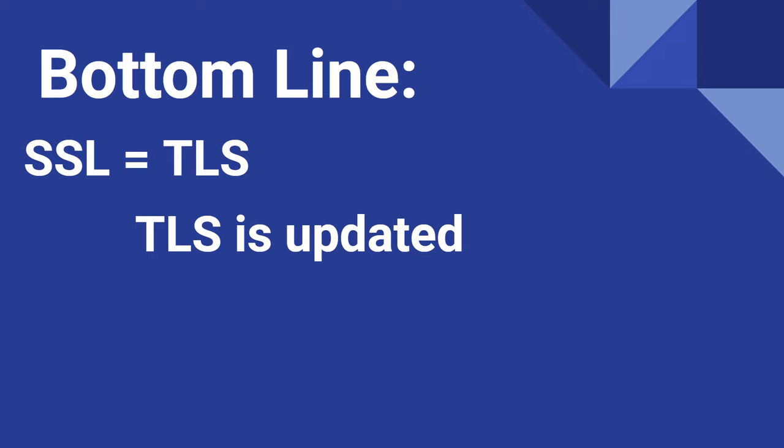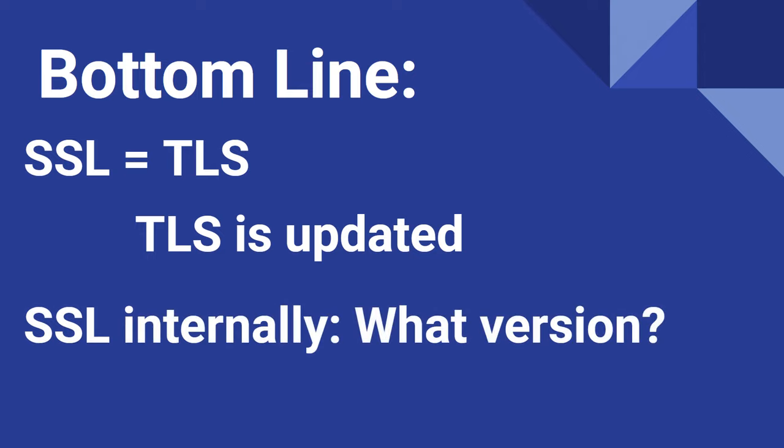One thing to keep in mind is that when talking about SSL on your jobs, be sure to ask what version people are using. For example, if you're maintaining a web application and your internal folks are saying they use SSL, it's important to distinguish whether it's SSL 3.0 or TLS 1.2, because if you're running a public-facing web application, it's essential that you have the more secure version, which is TLS 1.2 and not SSL 3.0.